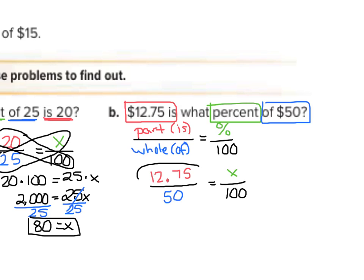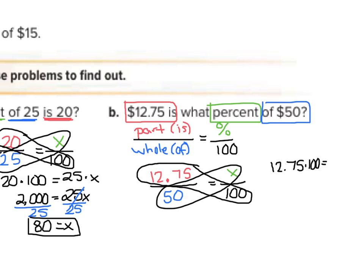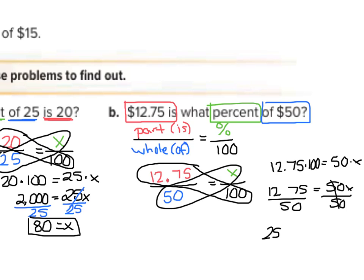Now we cross-multiply: $12.75 times 100 is going to equal 50 times x. $12.75 times 100 is 1,275 equals 50x. Dividing both sides by 50, we get an answer of 25.5. We're dealing here with a percent, so our final answer is 25.5 percent.